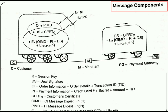These are the components of the message transmitted in a SET transaction. There are three entities: customer, merchant, and payment gateway. The order information and PIMD (payment information message digest) along with the digital signature and certificate of the customer are encrypted with a key and transferred to the merchant (M). The merchant then forwards it to the payment gateway (PG).